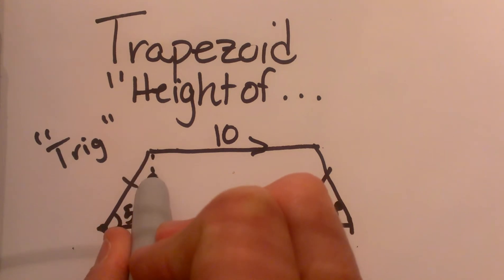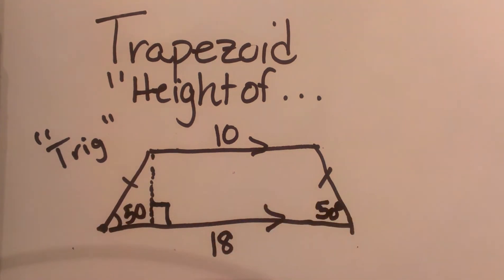We are going to strategically draw in an altitude right here that represents the height of the trapezoid. So now what we can do is figure out the length of this side of this right triangle right here.